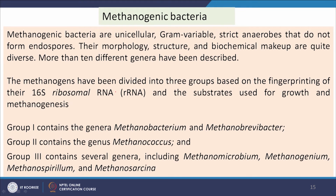Methanogenic bacteria are unicellular, gram-variable, strict anaerobes that do not form endospores; their morphology, structure, and biochemical makeup are quite diverse. More than 10 different genera have been described. Methanogens are divided into 3 groups based on 16S ribosomal RNA fingerprinting and substrates used for growth: Group 1 contains Methanobacterium and Methanobrevibacter; Group 2 contains Methanococcus; and Group 3 contains Methanomicrobium, Methanogenium, Methanospirillum, and Methanosarcina.